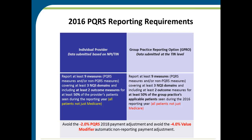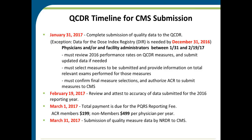In an effort to avoid reporting payment adjustments, those range anywhere from negative two to negative four percent across CMS quality programs for PQRS and the value modifier. Regarding deadlines: if you are submitting any PQRS measures and non-PQRS measures, our deadline to have all your quality data to the QCDR is January 31st, 2017.